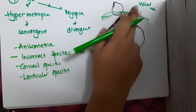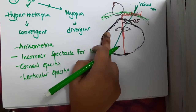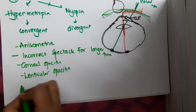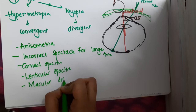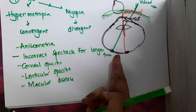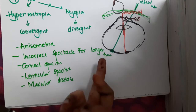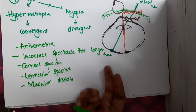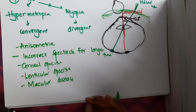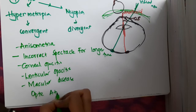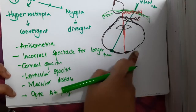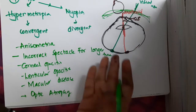Light bending more than normal due to lenticular opacities will also result in concomitant squint. When opacities are in the macula, in macular diseases, light passes through the clear cornea and lens but falls on a defective macula. Perception and binocular vision do not occur properly, and macular disease will also result in squint. Similarly, in optic atrophy, there is a defect in the optic disc, and this also causes concomitant squint.